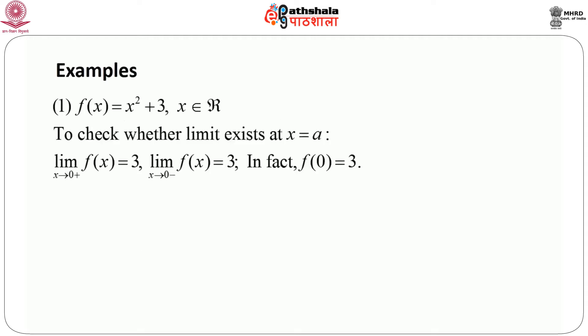Consider a parabolic function f(x) = x² + 3, when x belongs to R — defined for all real values of x. We want to check whether the limit exists at x = 0. The right hand limit — as x approaches 0 from the positive side, taking positive values and continuously approaching 0 but not equal to 0 — that limit equals 3. When we consider the left hand limit, as x approaches 0 from the negative side, lim(x→0⁻) f(x) also equals 3. In this case, f(0) is exactly equal to 3.